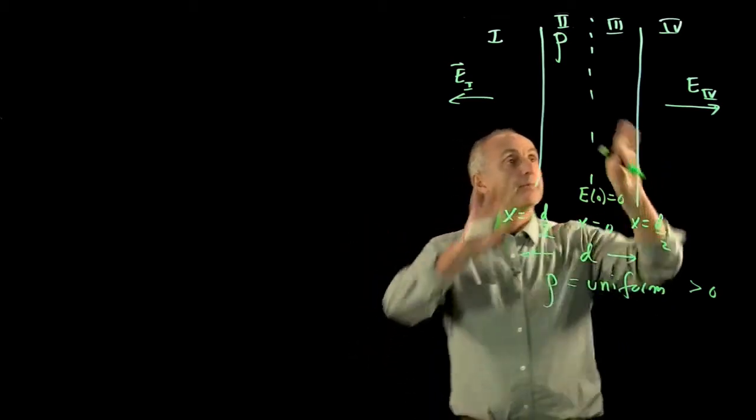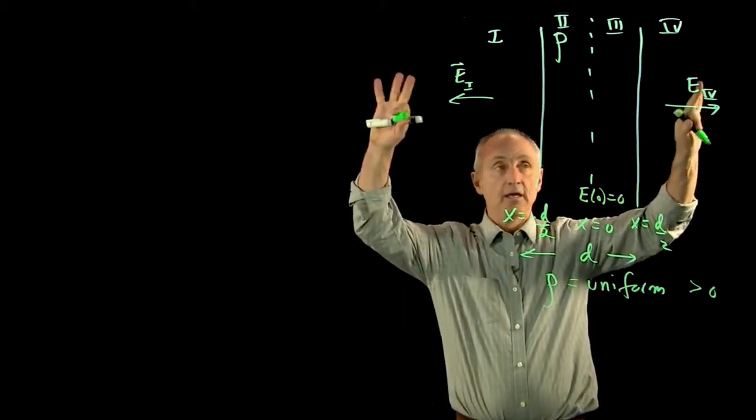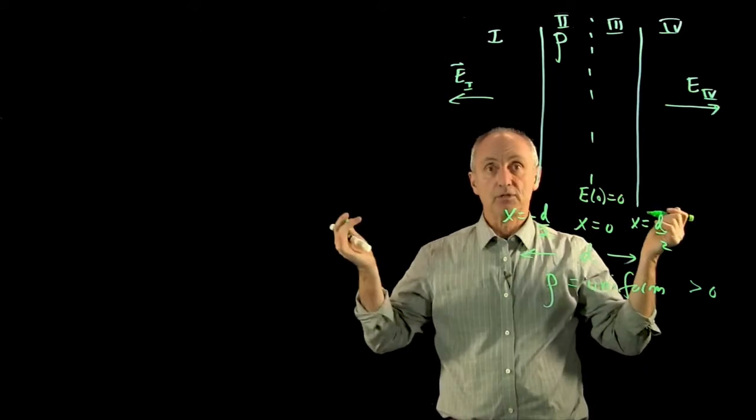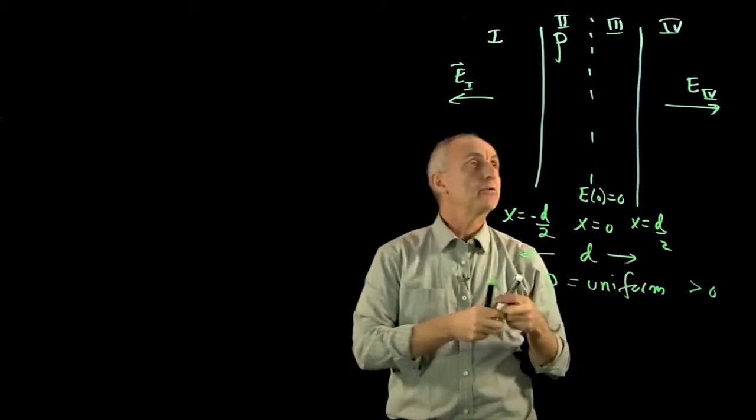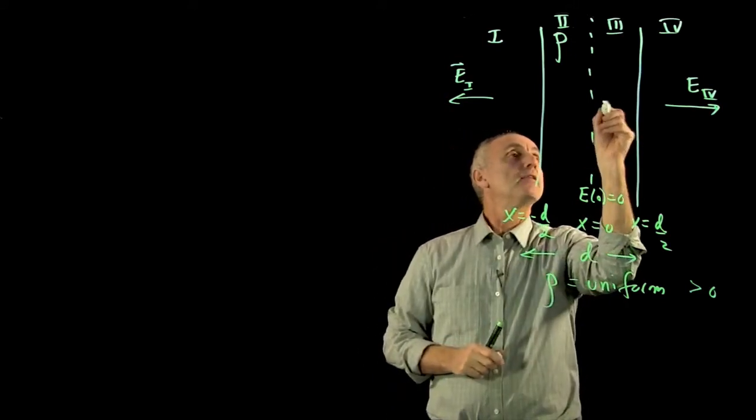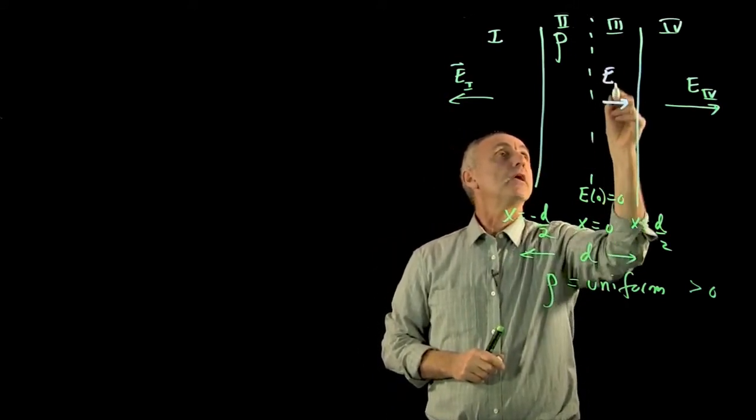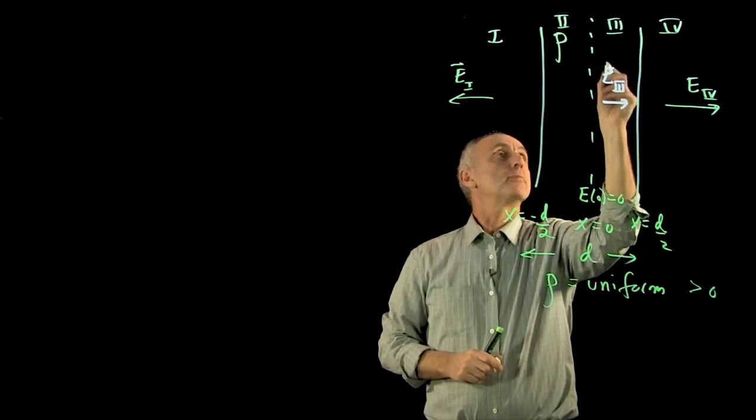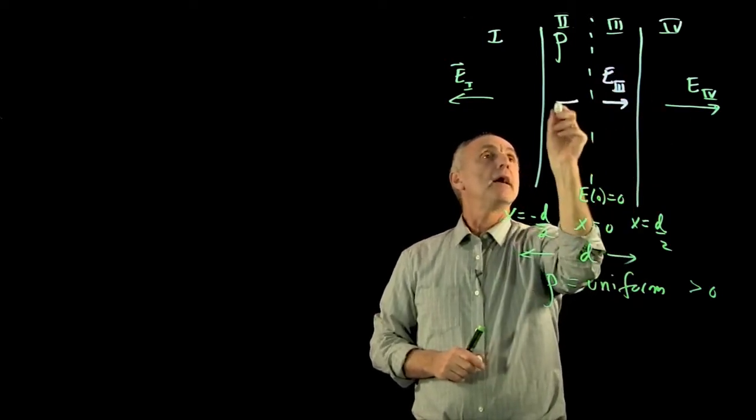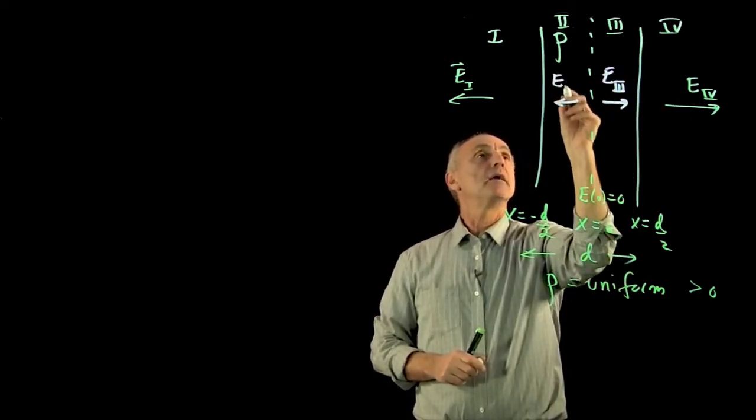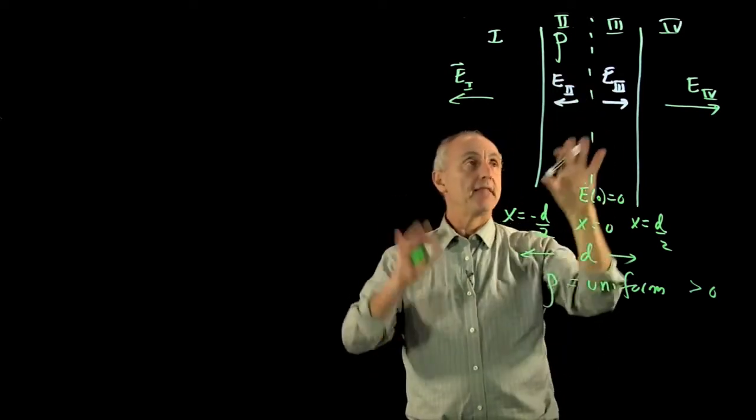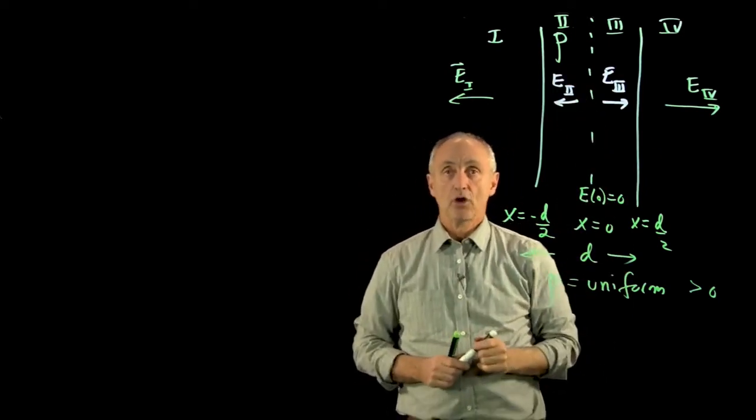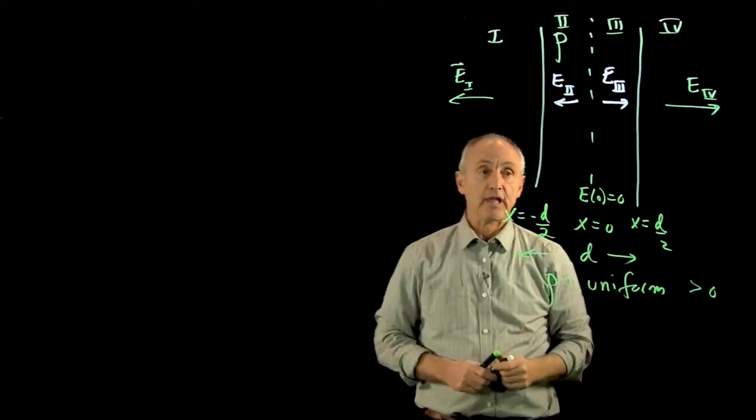Now, why is that? Because if the field is pointing away, somewhere in the middle it has to be 0, and by the symmetry, it has to be at the center of the slab. And that will tell us that on this side of the center, e3, the field is going to be pointing to the right. And on this side, e2, the field will be pointing that way. And that is what the electric field looks like inside the slab.